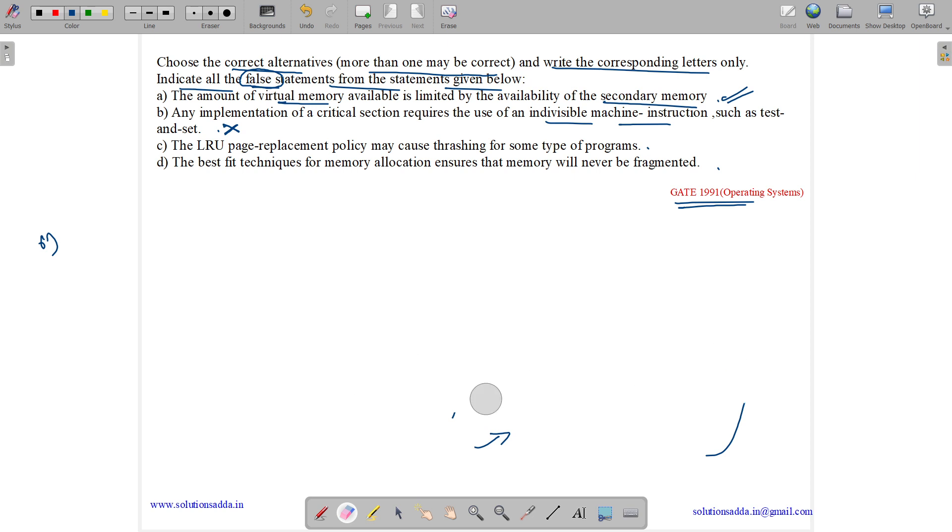Now let us see option C. So what option C is saying? Option C is saying the LRU page replacement policy may cause thrashing for some type of programs. So what is LRU? LRU is least recently used. And what is thrashing? Thrashing is a condition in which most of the time is spent in resolving the page fault. Page fault time is very high, which means we are getting very many page faults.